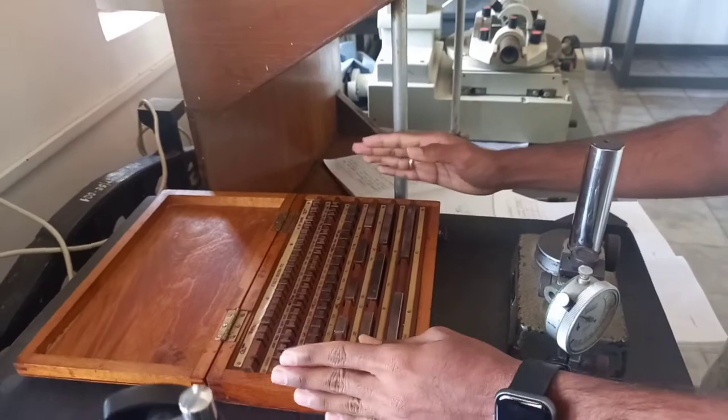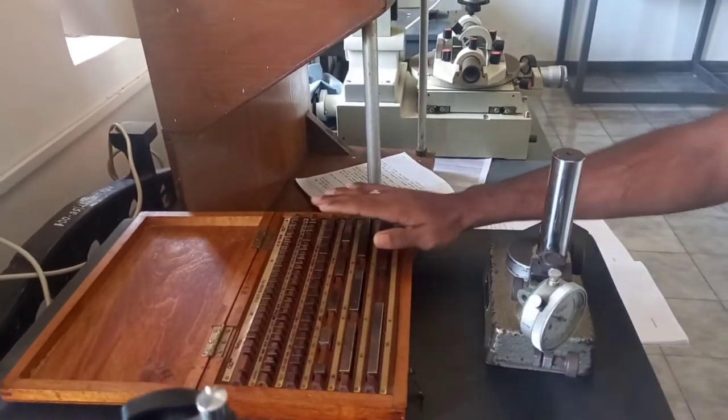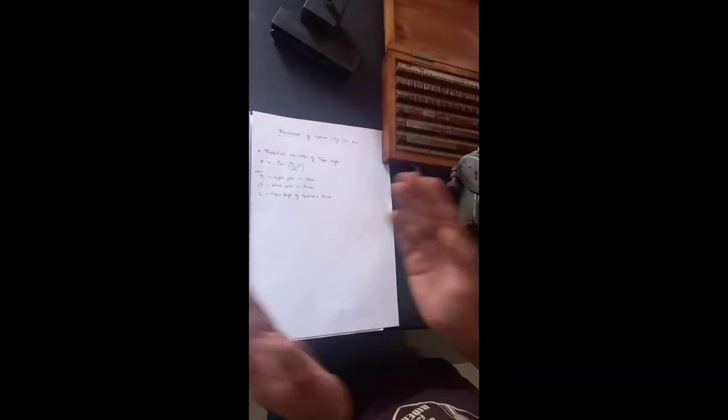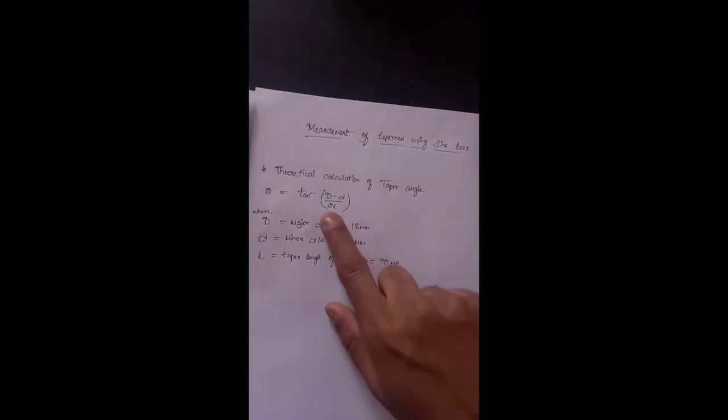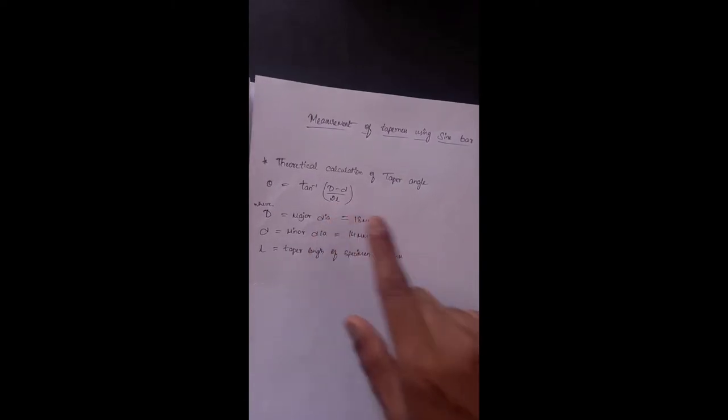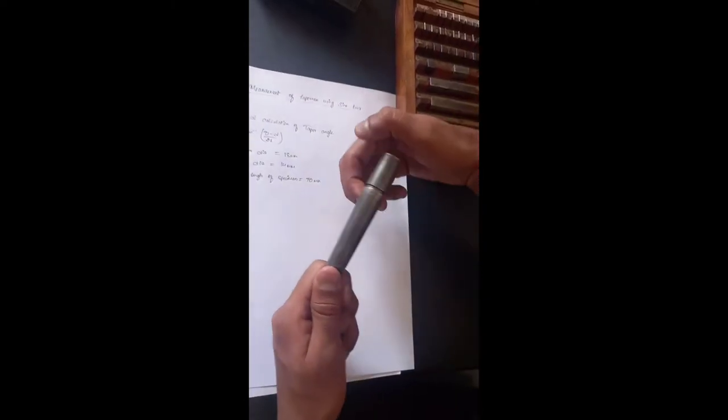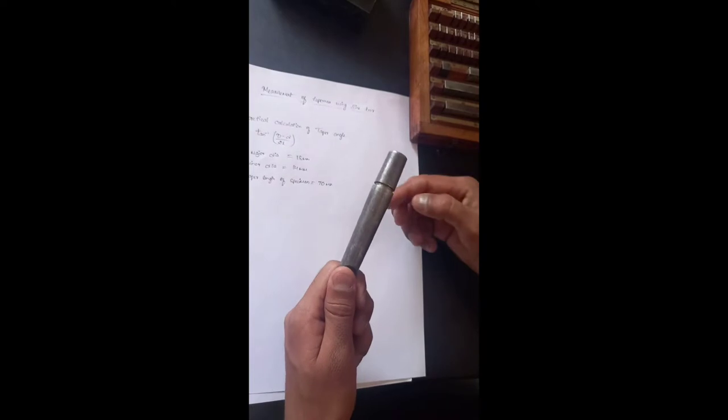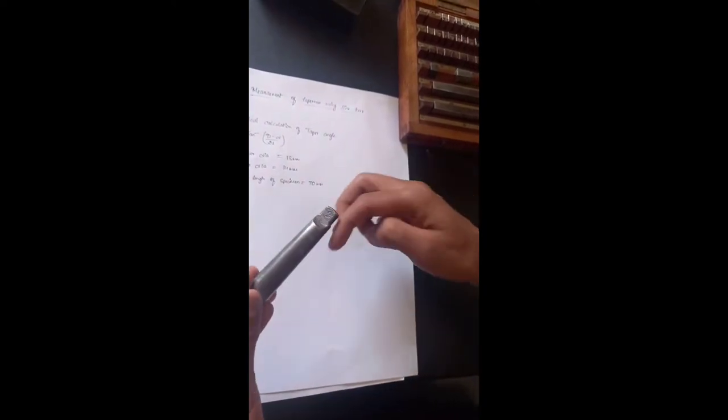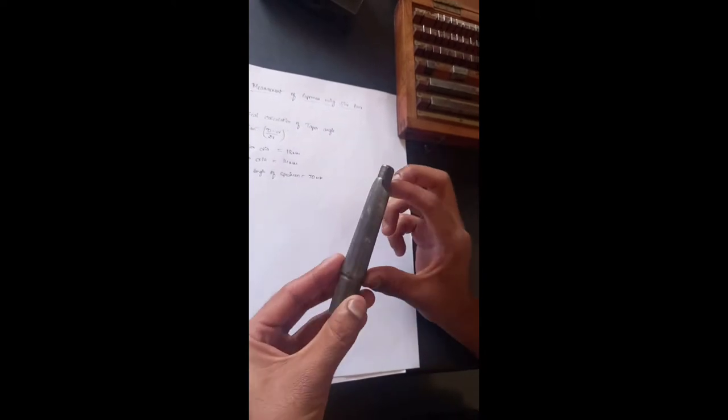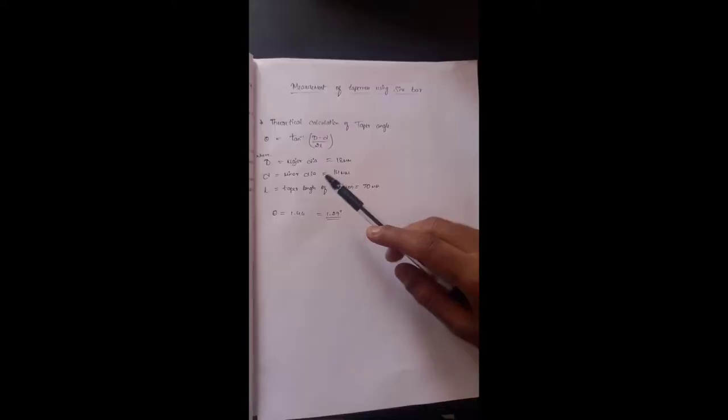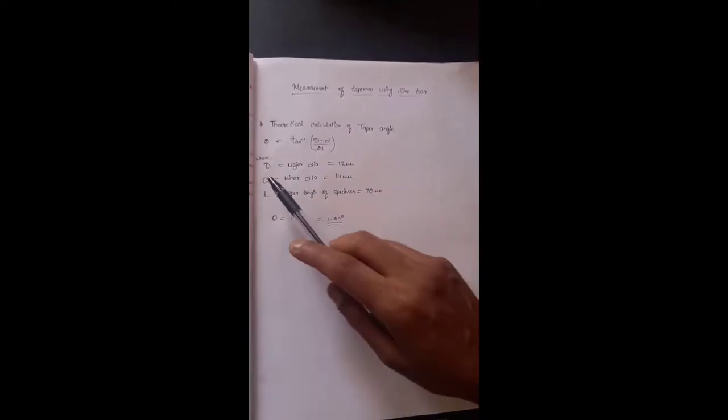And again we have slip gauges required. To find the theoretical taper angle we use the formula theta equals tan inverse of (D minus d) by 2L, where capital D is the major diameter of the specimen, small d is the minor diameter of the specimen, and L is the length of the specimen.